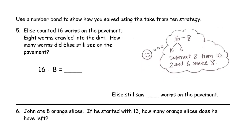Now it says use a number bond to show how you solved using the take from 10 strategy. Elsie counted 16 worms on the pavement. 8 worms crawled into the dirt. How many worms did Elsie still see on the pavement? So 16 and 8, they're really too far apart to count up. I mean, you could do it, but it's going to be more work than taking from 10.